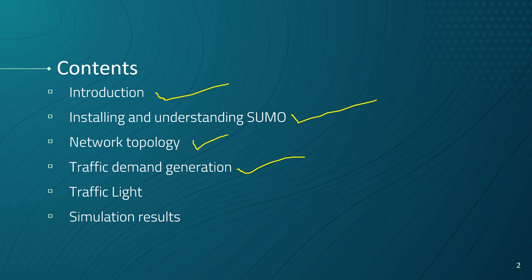In the fifth video we will spend some time on the traffic light context — how to create a signalized intersection or modify the existing traffic light. Traffic lights play an important role in the traffic network performance, so it's worth spending some time on this context.